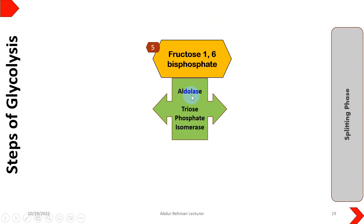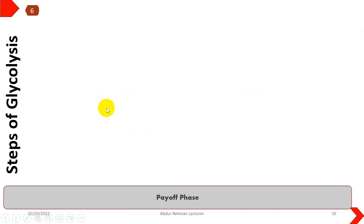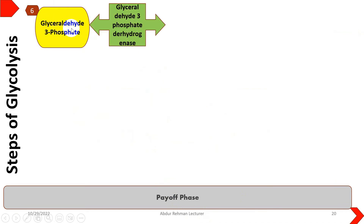In the splitting phase, fructose 1,6-bisphosphate, with the help of the enzyme aldolase, will be converted into two three-carbon molecules: one is dihydroxyacetone phosphate and the other is glyceraldehyde 3-phosphate. These two molecules are interconvertible with one another by a reversible reaction with the help of triose phosphate isomerase. Glyceraldehyde 3-phosphate will further lead to the glycolysis process.